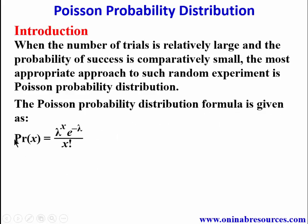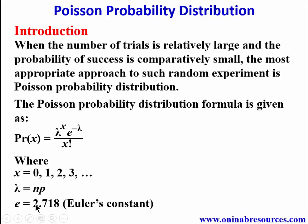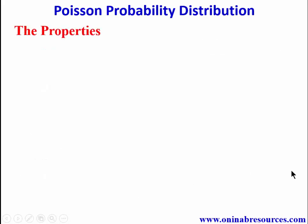The Poisson probability distribution formula is: P(x) = λˣ · e^(−λ) / x!, where x = 0, 1, 2, 3, 4, and so on. Lambda (λ) is np, where n is the total population and p is the probability of success. e is Euler's constant, equal to 2.718.